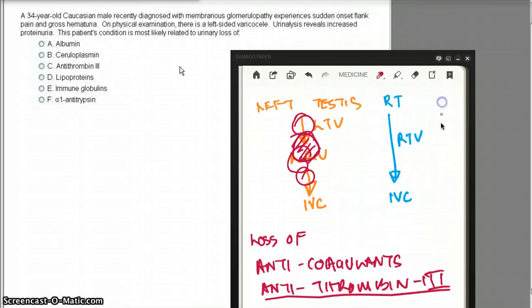Urine analysis reveals increased proteinuria. The patient's condition is most likely related to urinary loss of... We know that this is nephrotic syndrome, but we're not only talking about nephrotic syndrome. We're talking about nephrotic syndrome plus hypercoagulable state.